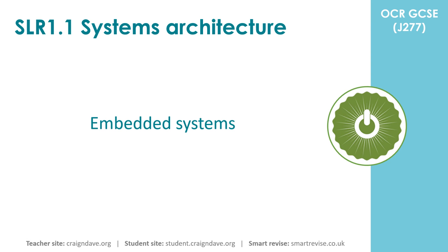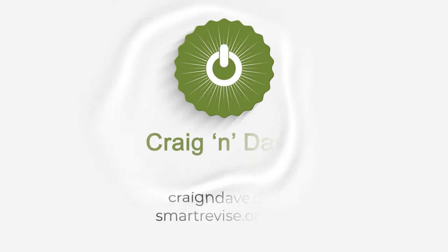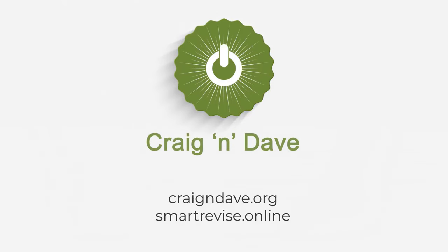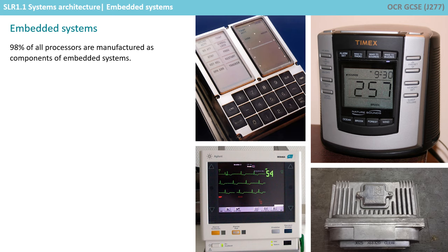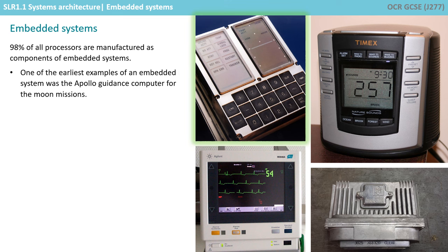In this video, we take a look at embedded systems. An embedded system is a computer system with a dedicated function within a larger mechanical and electrical system. 98% of all processors are manufactured as components of embedded systems. One of the earliest examples of an embedded system was the Apollo guidance computer used for the Moon missions.